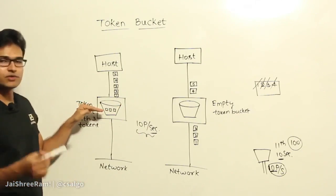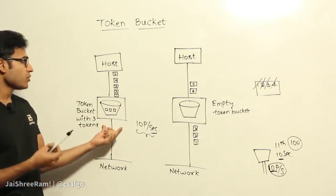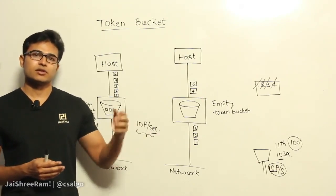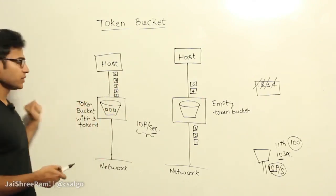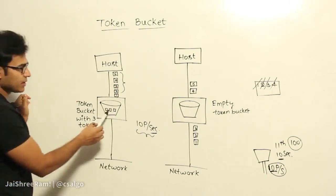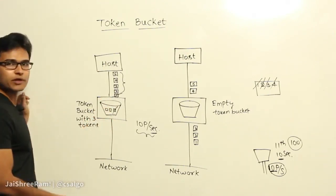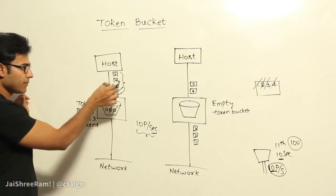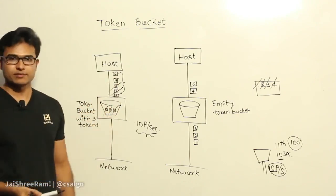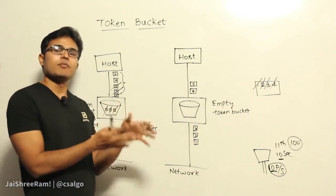Even if the sender is not using those tokens now, it can use them whenever required. So it is mainly used to support bursty data — sometimes you don't get any data and sometimes you get a lot. Whenever you are not using your allocation, your credentials accumulate and later you can use them. For example, five packets want to be sent; the sender gained three tokens, so packet 1, 2, and 3 go out taking tokens 1, 2, and 3. Packets 4 and 5 wait until more tokens accumulate.